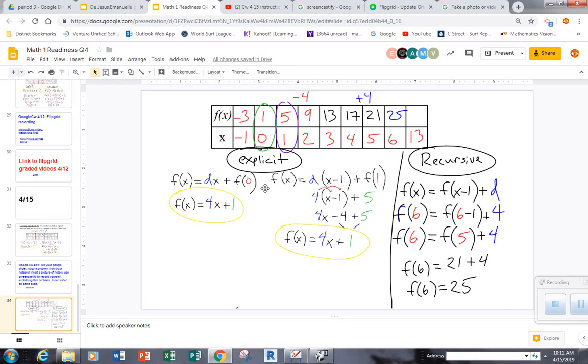So those are some things you could say. Talk about how you use the zero term, how you use the first term instead, but how to distribute and combine like terms. How this notation shows to find any term in the sequence, use the one before it and keep adding that number.